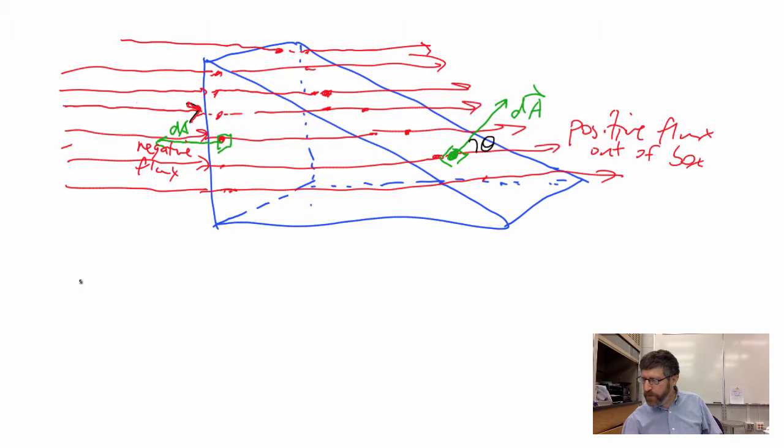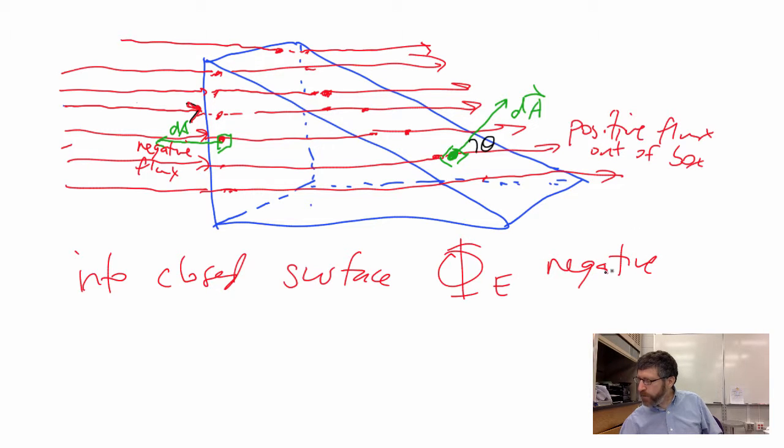So in summary, anytime you go into a closed surface, the flux, the electric flux is negative. If you go out of a closed surface, the electric flux is positive.